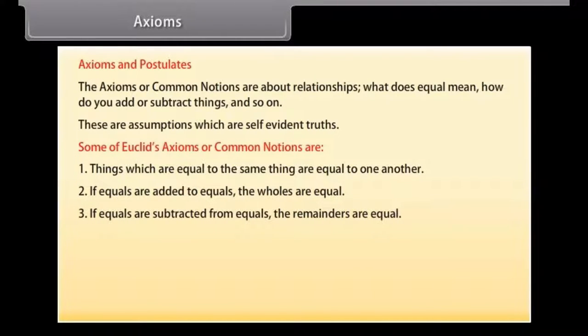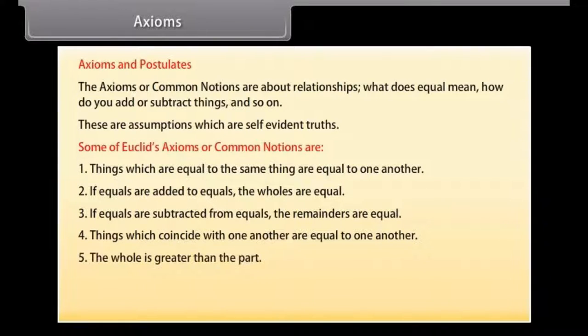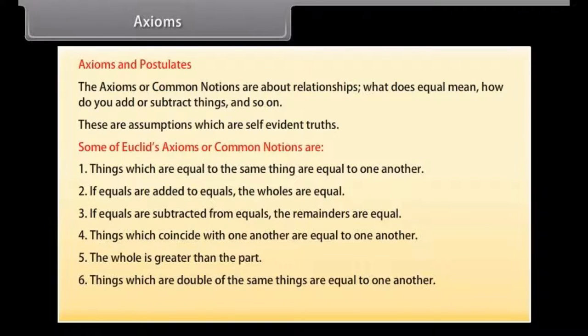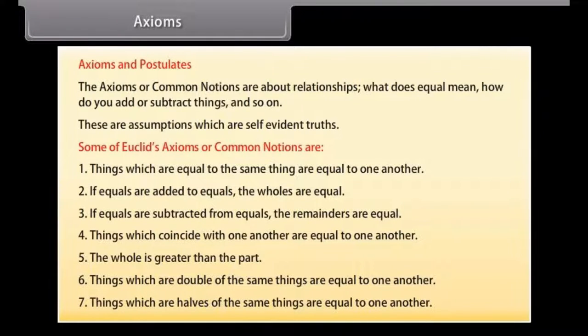3. If equals are subtracted from equals, the remainders are equal. 4. Things which coincide with one another are equal to one another. 5. The whole is greater than the part. 6. Things which are double of the same things are equal to one another. 7. Things which are halves of the same things are equal to one another.